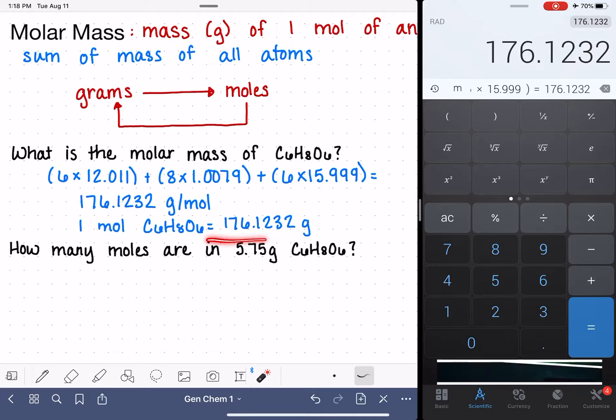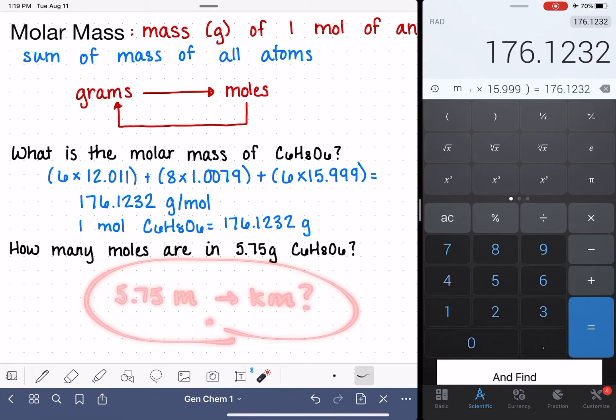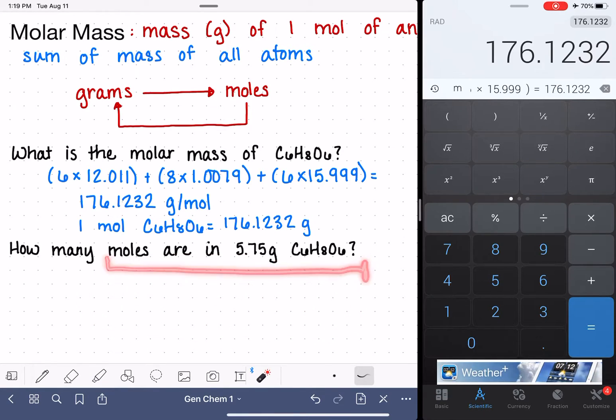This equivalent is how we're able to use molar mass to convert back and forth between units of grams and moles. In this example, we are given a specific mass of C6H8O6, 5.75 meters, and we're asked to convert that mass into moles. Think about this just like any type of unit conversion problem.